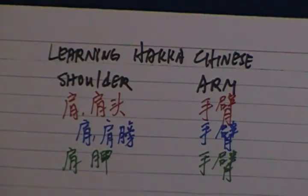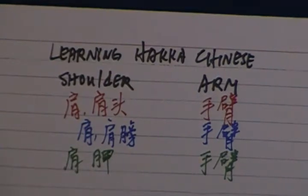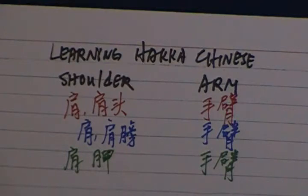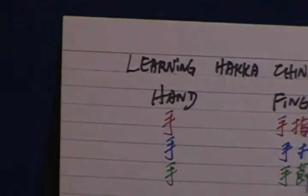Arm. Arm in Hakka Chinese is Su Bi. In Mandarin is So Bi. And in Shanghainese dialect is Se Bi. Su Bi in Hakka Chinese, So Bi in Mandarin, Se Bi in Shanghainese dialect.